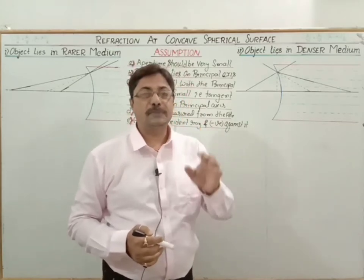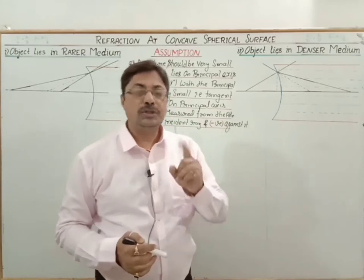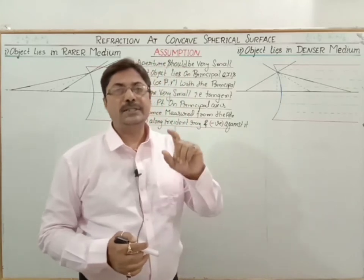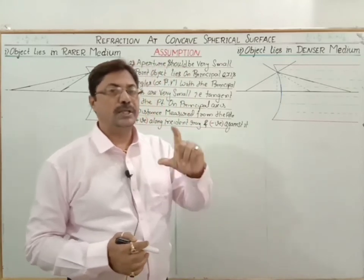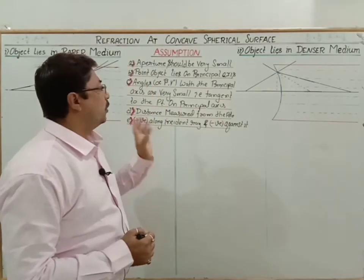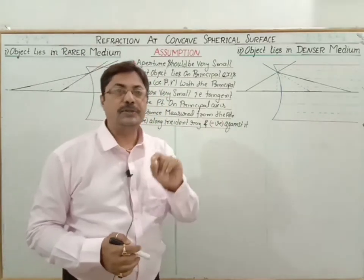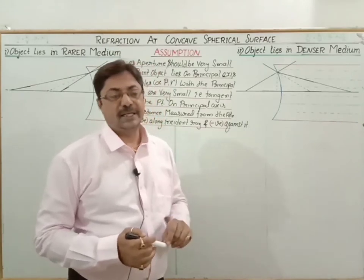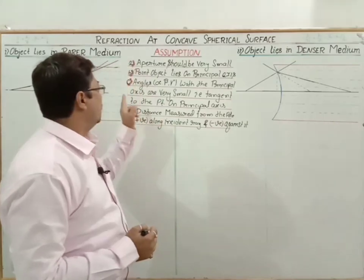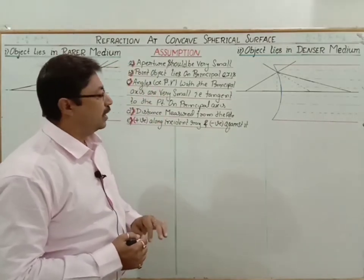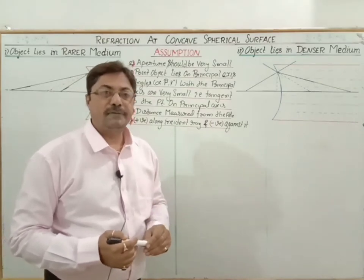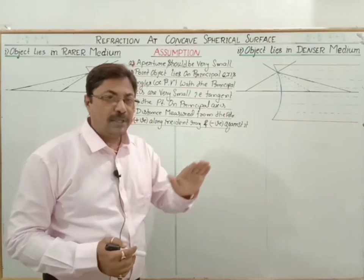Before solving this or deriving the expression, some assumptions we have to keep in mind. Those assumptions are: the aperture should be very small — we have to consider a very small aperture. Not only that, we have to take a point object; the object will be a point object lying on the principal axis.